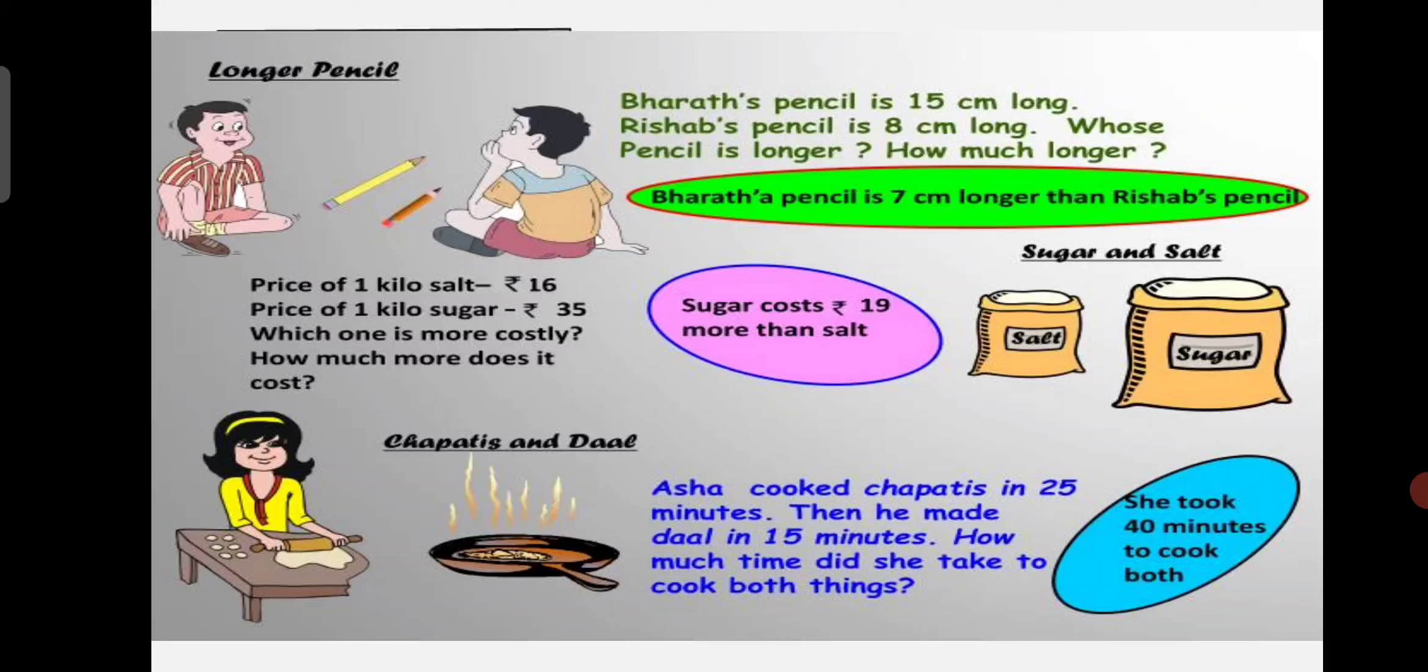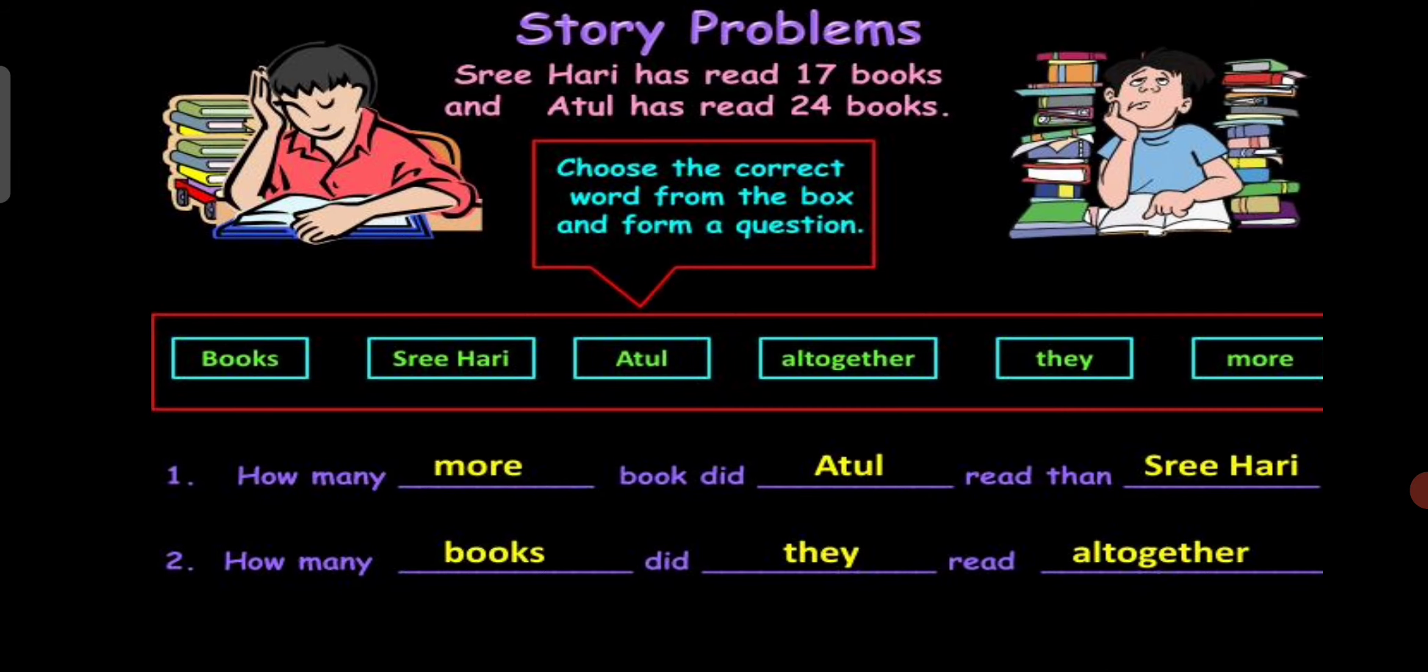Price of 1 kg salt is Rs. 16, price of 1 kg sugar is Rs. 35. Which one is more costly? How much more does it cost? By seeing the number, the child is able to compare and tell that the Rs. 35 item is more costly, but how much? Then he has to perform the subtraction. We can give some story also to the child in the form of word problems.